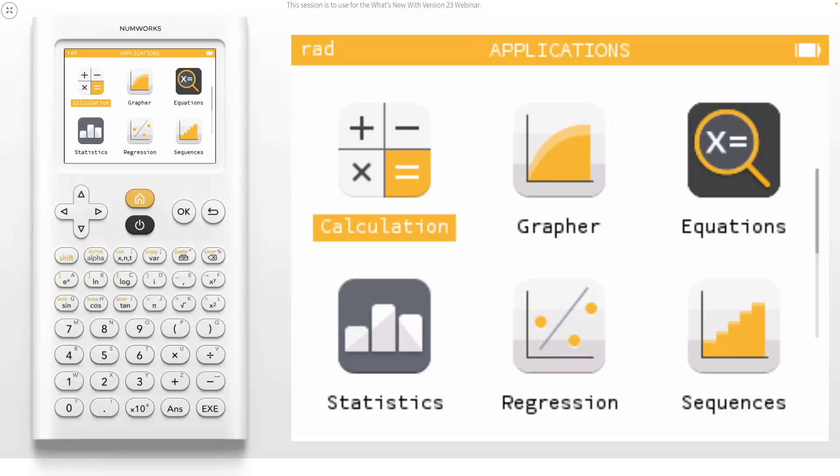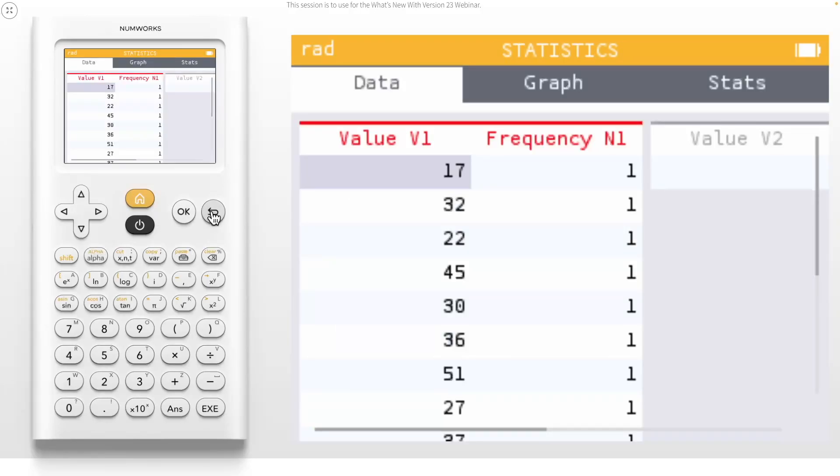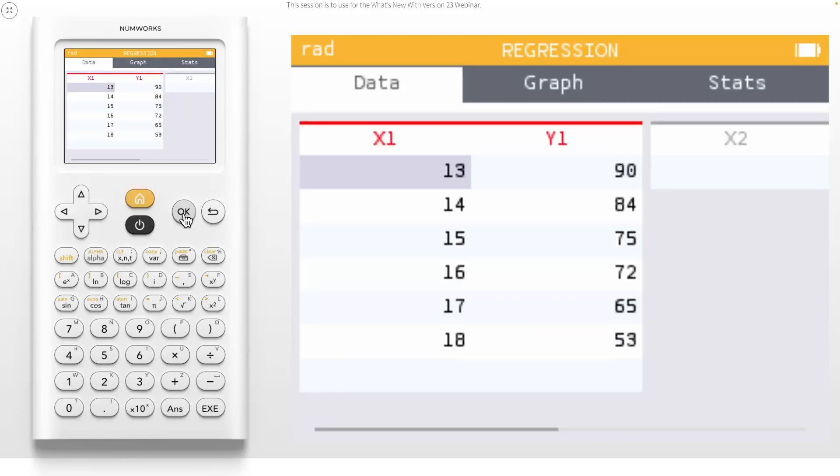The first update is probably one of our most requested updates from our stats community. We've added the ability to use a data set for significance tests and confidence intervals about the mean in the Inference application. Before we enter the Inference application, let's take a moment to notice that I've already added a data set to the statistics application and regression application. These data sets are now synced with the Inference app.